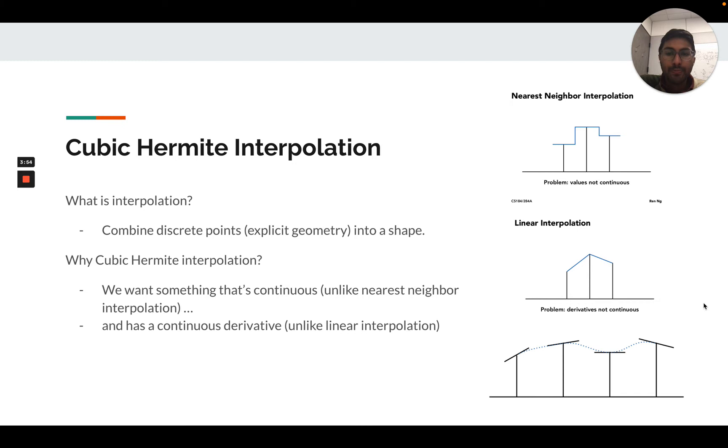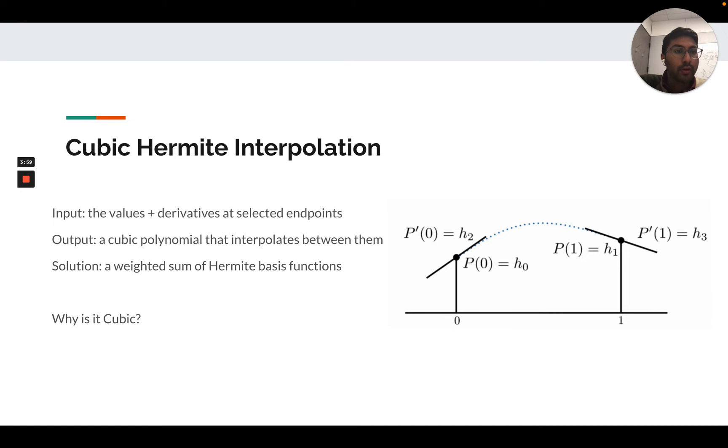Cubic Hermite interpolation takes as input four points per segment of the curve. The interpolation strategy is how do we interpolate a sample at zero? Given the value of this polynomial p, like the name suggests this polynomial p is a cubic polynomial, the user provides as input the value of the function at zero, as well as the value of the function at one, h1 here. So these will define two constraints.